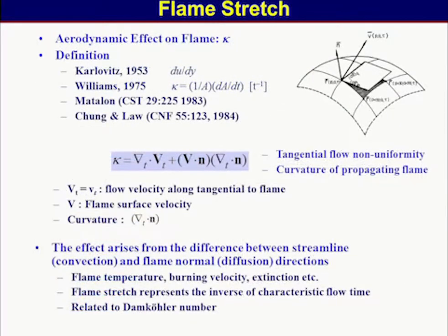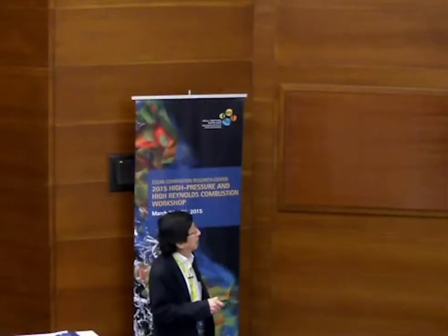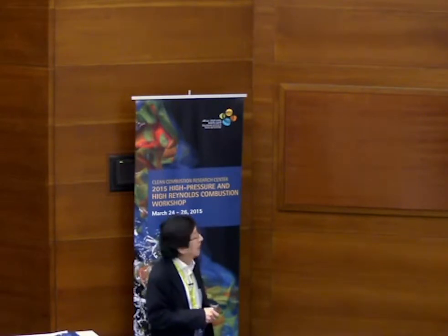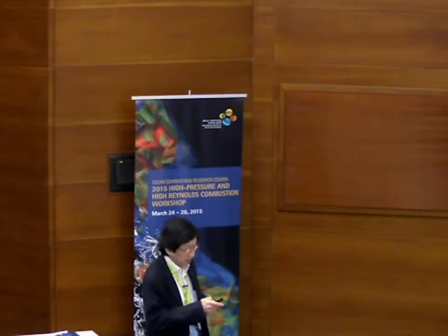Flame stretch is the fractional area change of the flame with time. Expressed in vector form, stretch has two factors: one is the tangential flow non-uniformity along the flame surface, and the other is the curvature of a propagating flame, where the flame surface velocity on the tangential surface equals the flow velocity. The effect of flame stretch on flames comes from the difference between the streamline direction and the flame normal direction, which is controlled by diffusion.